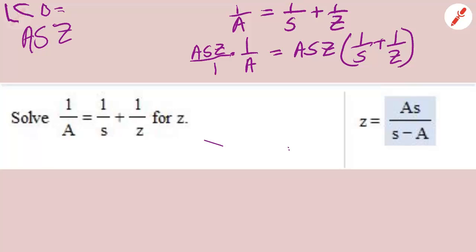Now what I need to do is distribute A, S, Z to 1 over S and to 1 over Z, so that I have ASZ over 1 times 1 over A plus ASZ over 1 times 1 over Z.